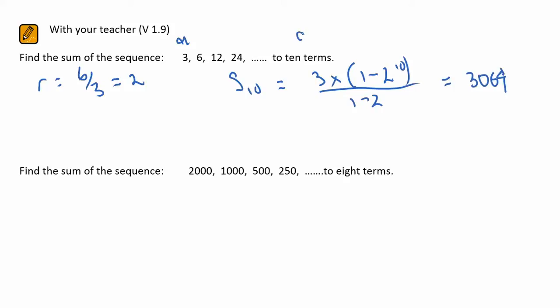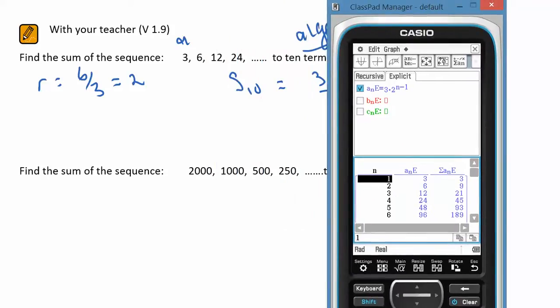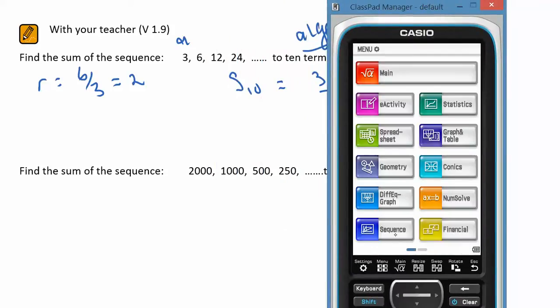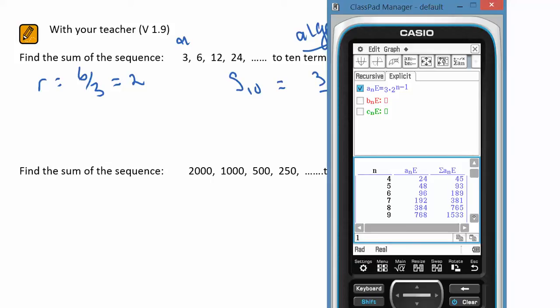Now when the instruction appears to do this using algebra, this is the process you have to follow. On the other hand, if you want to just do this using your calculator, from the menu sequence, write that in, enter, and then choose the column button. You'll quickly see that to 10 terms we get 3069 as well.